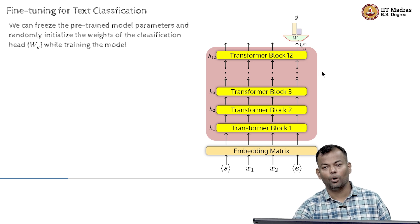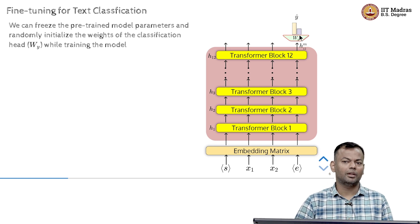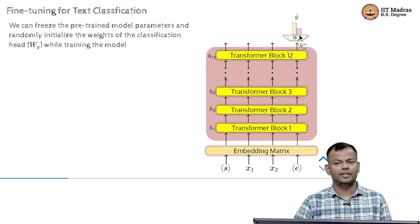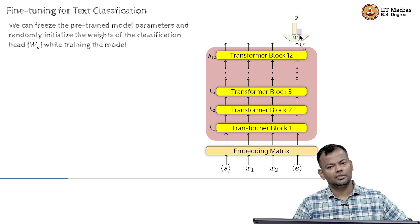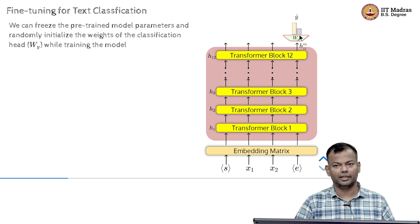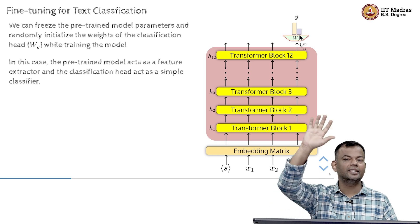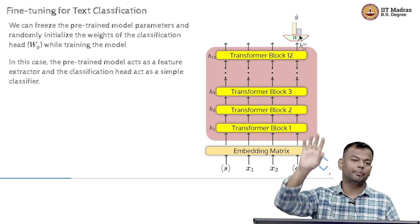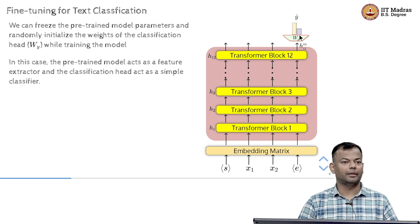So, in that case, you freeze all the parameters of the transformer and only train the newly added parameters, which is WY in this case. And it makes sense because you have smaller amount of data. So, it makes sense to just train a smaller amount of parameters with it. The other is given that the model has already learned a lot from previous data, you don't want to disturb that. So, this is the other motivation for freezing the backbone or not updating the parameters of the backbone.